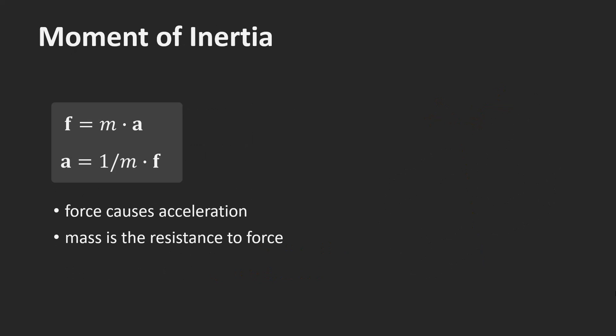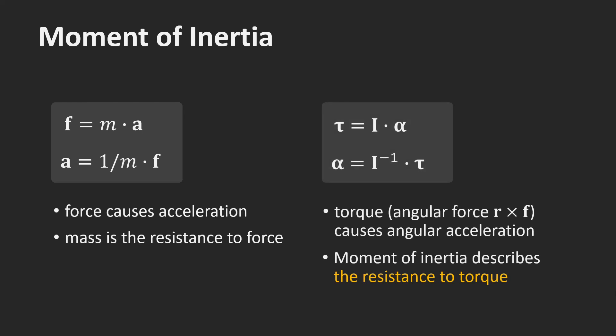The third additional quantity is the moment of inertia. We have used Newton's second law, f equals ma, many times before. We use this equation to simulate the center of mass of the body. Solving for a shows that the mass describes the resistance of the body to force. For larger masses, it takes a stronger force to cause the same acceleration. There is a rotational version of Newton's second law as well.